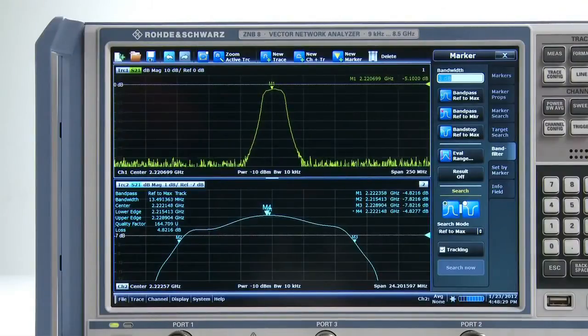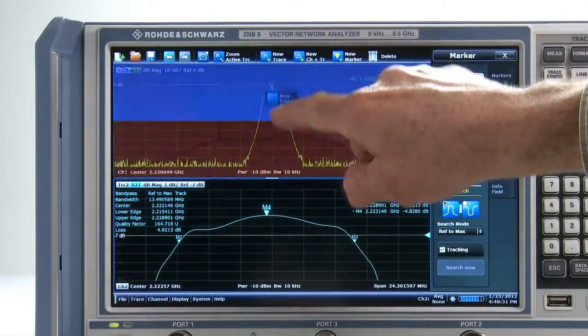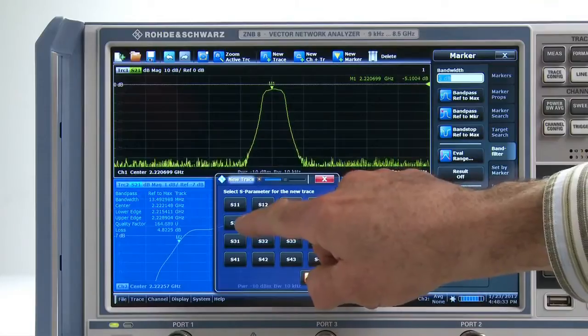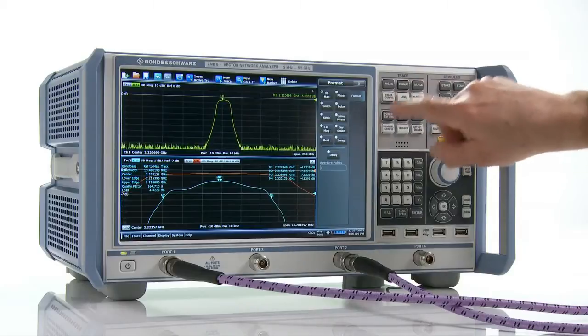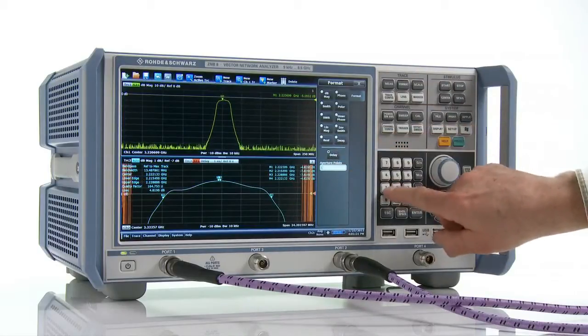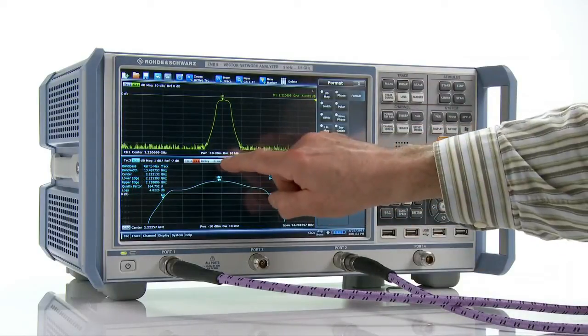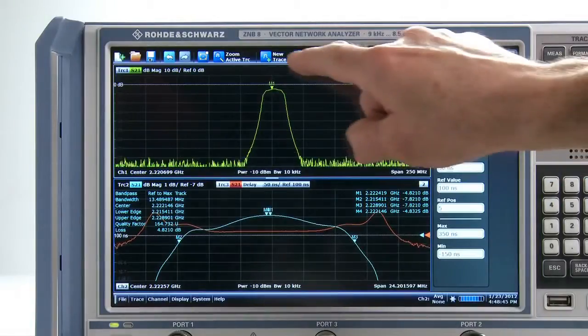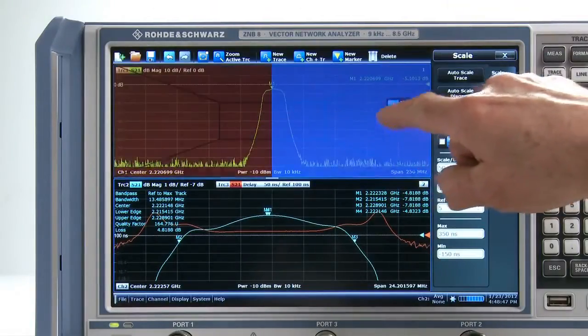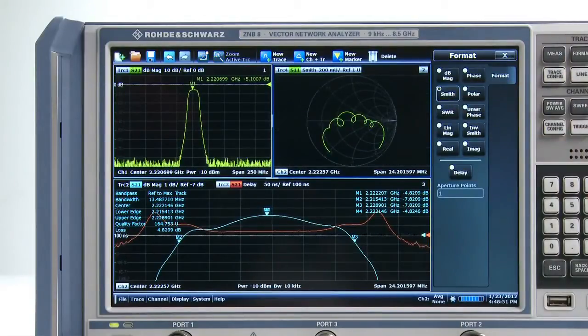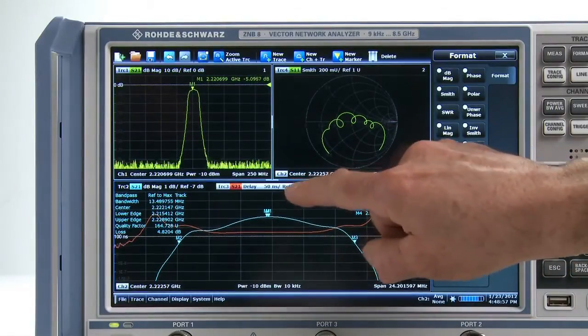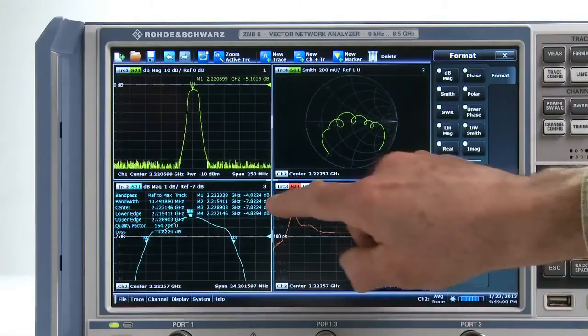Other traces can be activated in the same window by dragging and dropping the desired measurement functions into it. For example, group delay. We now continue filter characterization by displaying the filter trace in a Smith diagram, which we present in a new window. You can change the screen configuration whenever you want. Prefer to see the group delay in a separate window? Drag and drop it in seconds.